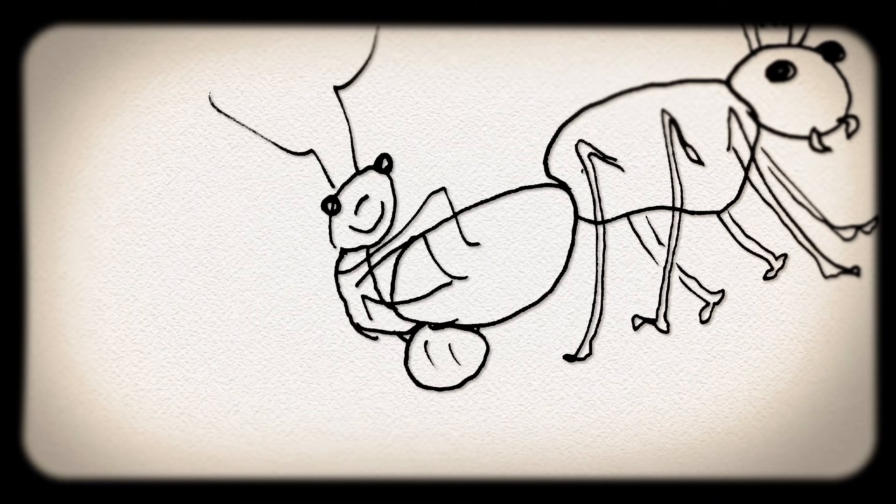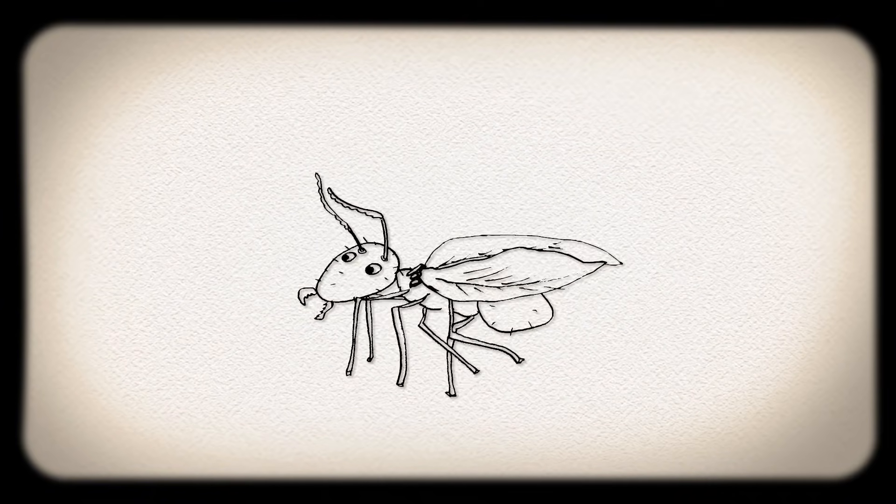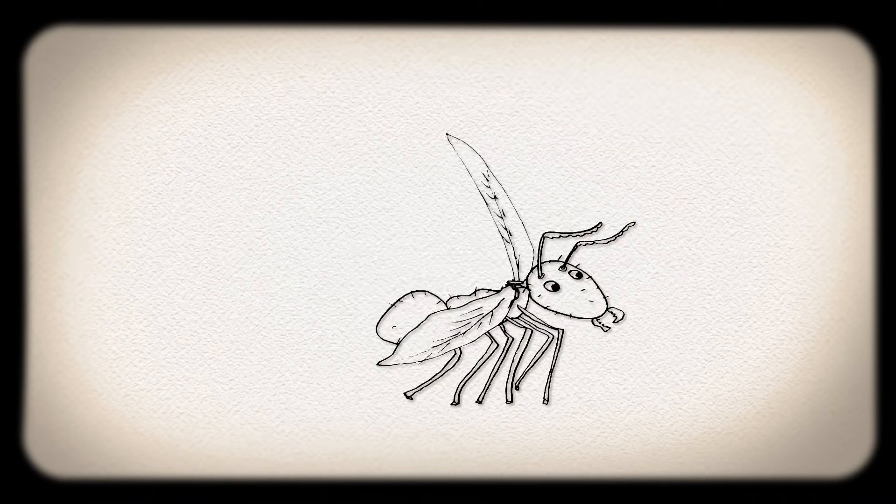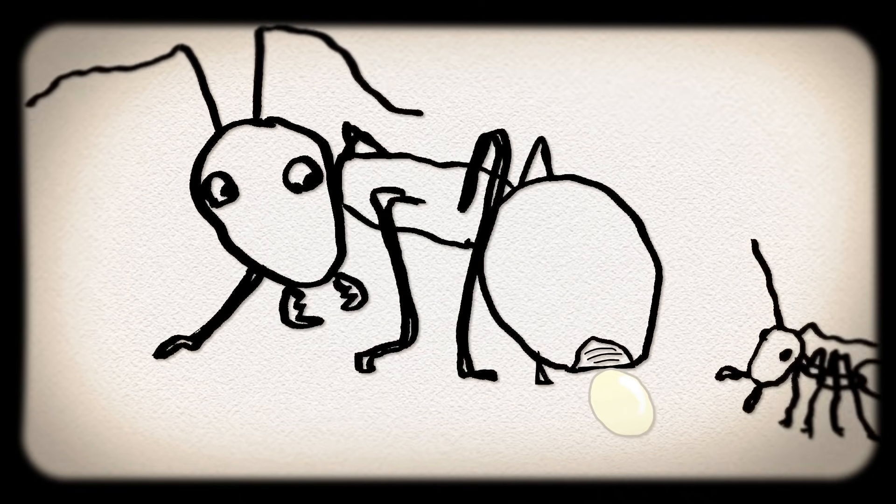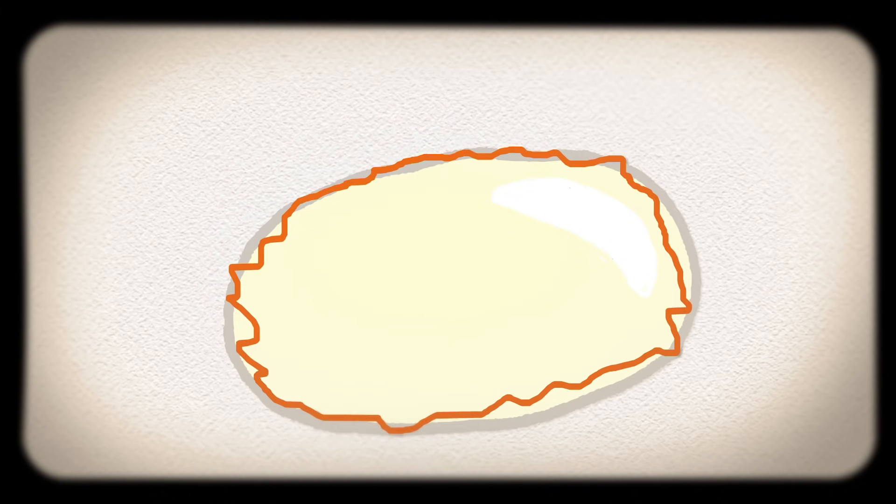After mating, the males die off, while females try to establish a new colony. The few that are successful settle down in a suitable spot, lose their wings, and begin laying eggs, selectively fertilizing some using stored sperm they've saved up from mating.